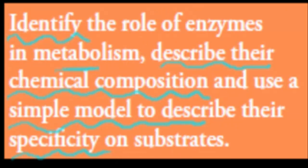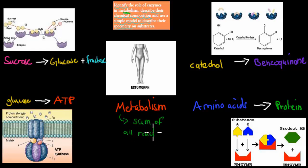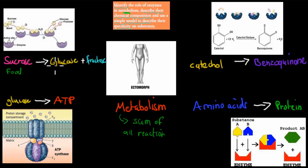First, the word metabolism. What metabolism is, is basically the sum of all chemical reactions. For example, here we have sucrose — like table sugar — which breaks down to glucose and fructose. This arrow means that a chemical reaction has occurred.